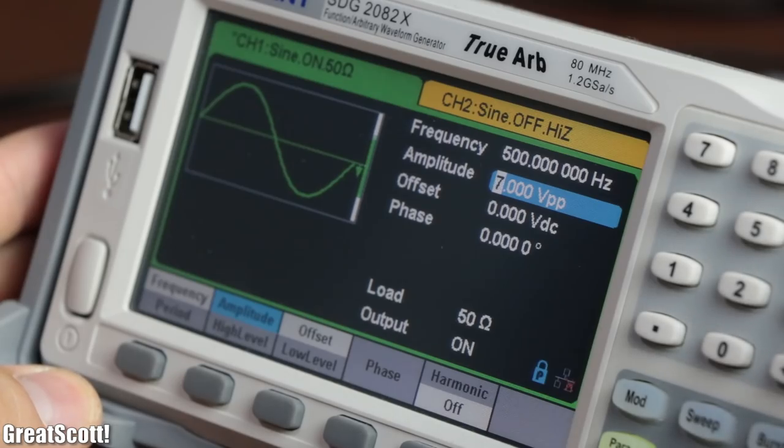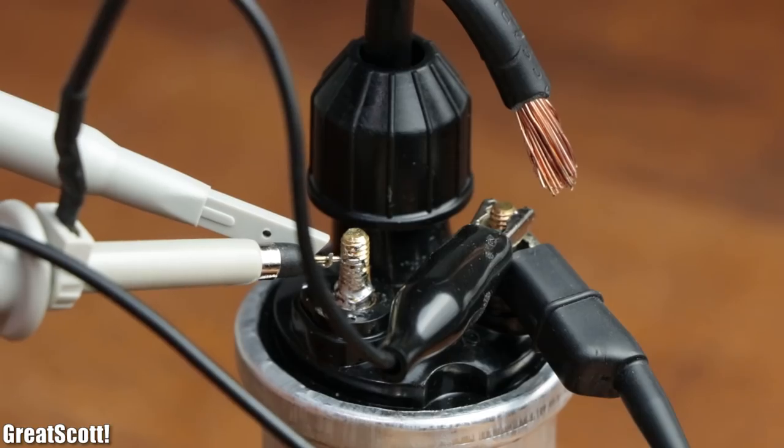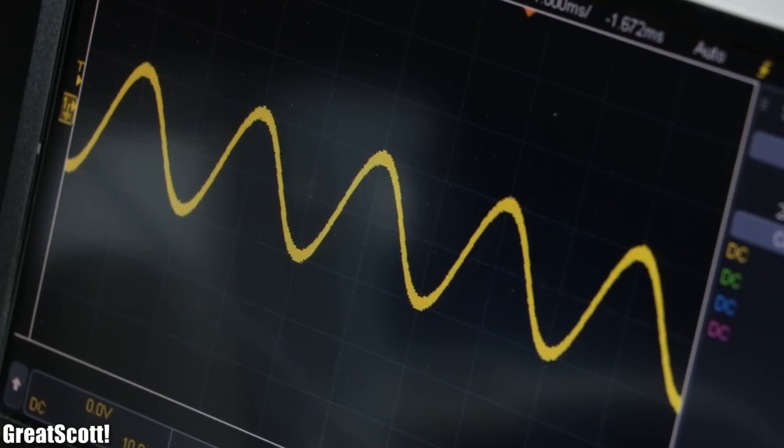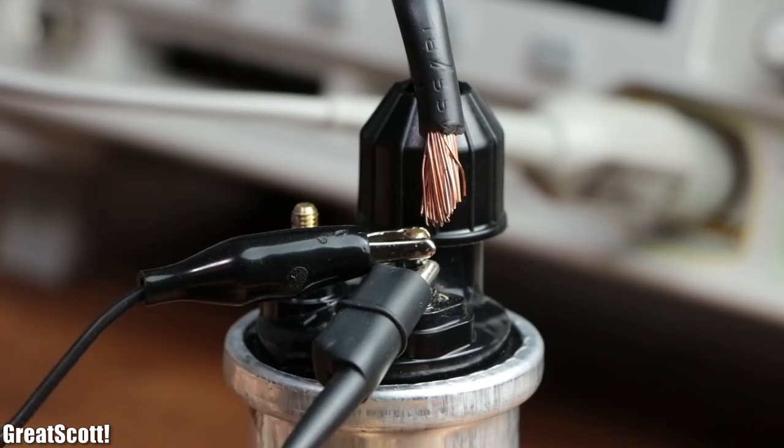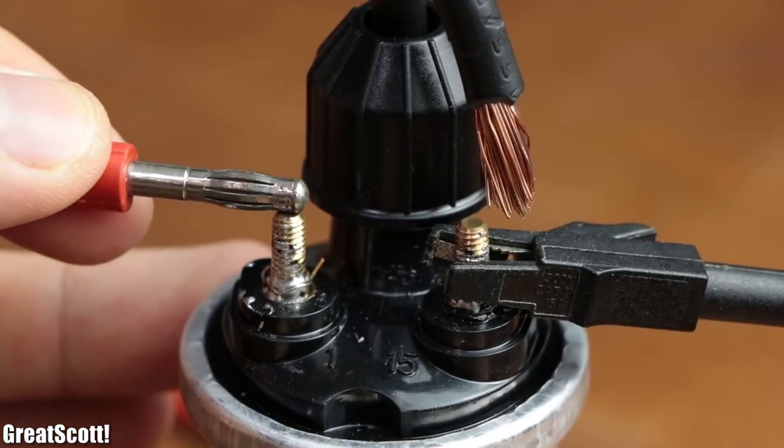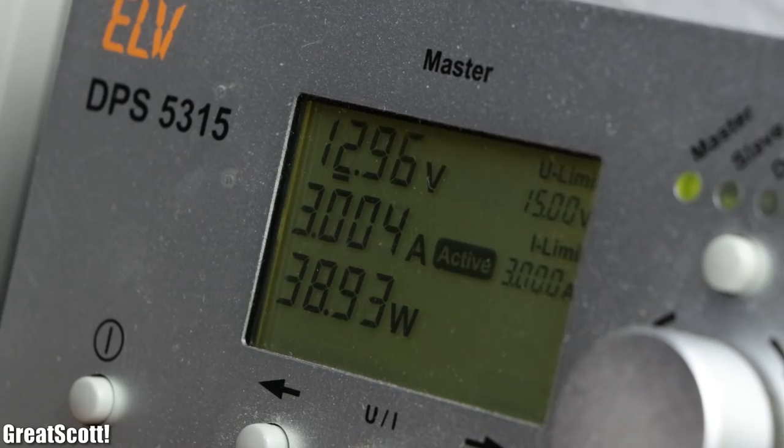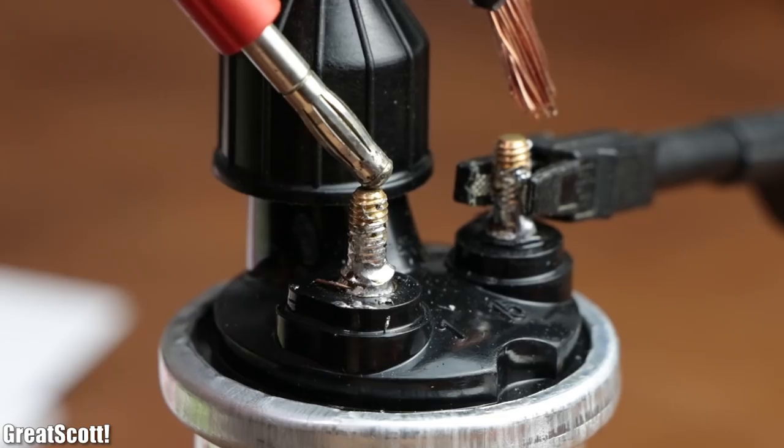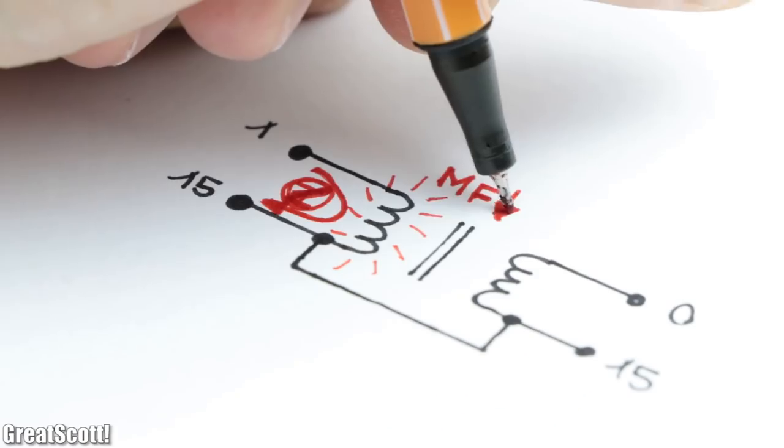But since applying such a high power AC signal to the primary is not that easy to accomplish with a function generator, I tried out a simpler method to test the ignition coil transformer. By letting 3 amps flow through the primary coil with my lab bench power supply, a magnetic field is built up which after disconnecting the power supply collapses.